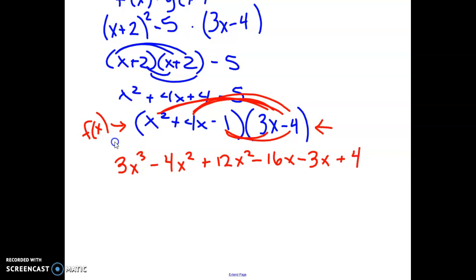To finish it, then we just have to combine like terms. So I see I have some x squareds and I have some x's. So when we combine them together, we'll get 3x cubed plus 8x squared minus 19x plus 4. And that would be the product.